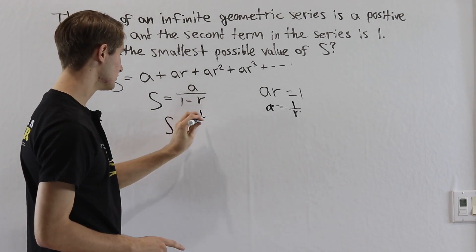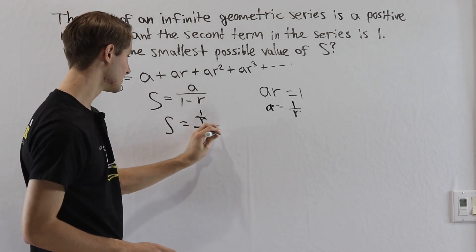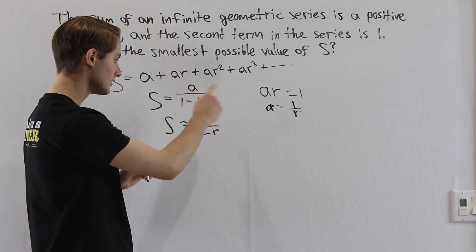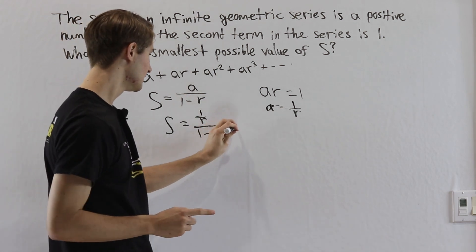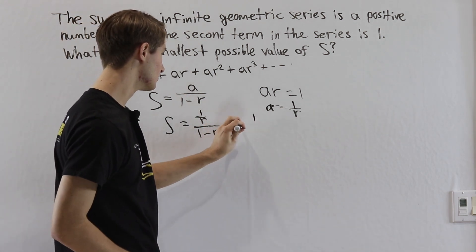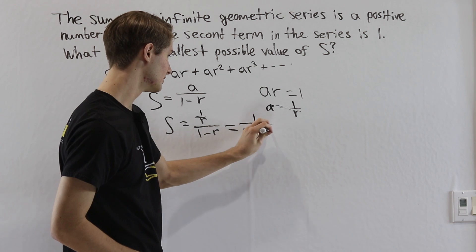a is 1 over r on the top, divided by 1 minus r. We can bring this r all the way to the denominator here, and that will give us that s equals 1 over r times 1 minus r.